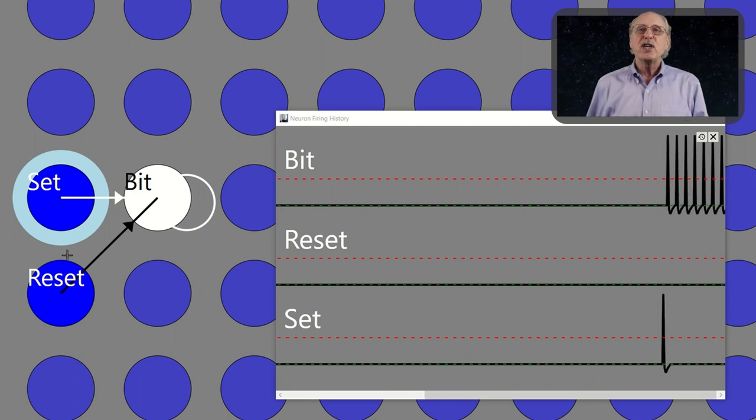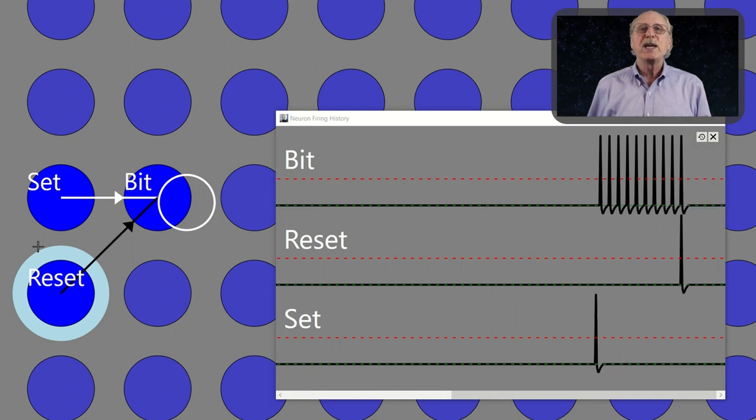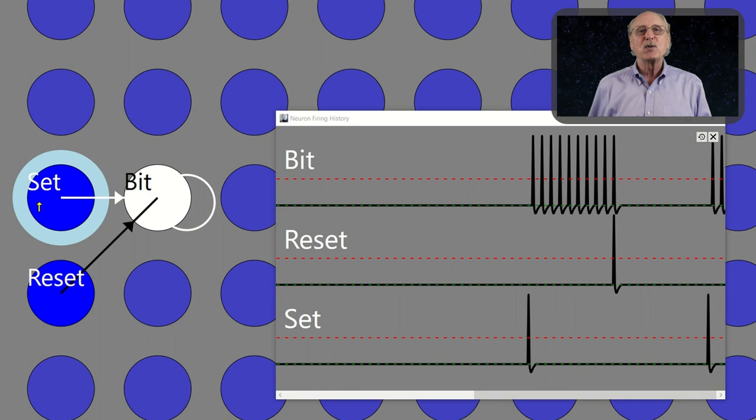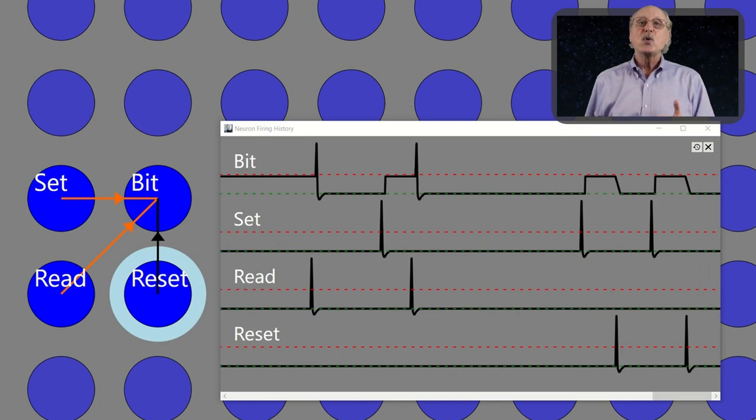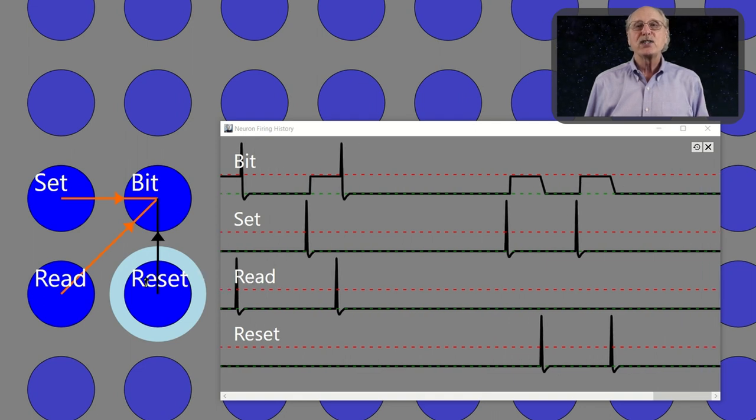This is easy to understand, but uses a lot of energy for that continuously spiking neuron, because neurons need energy to spike, but almost none otherwise. A better model stores the bit as the accumulated charge, as opposed to the firing state.